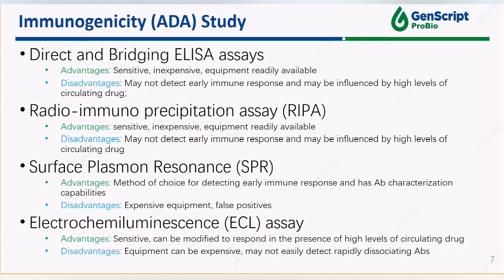Electrochemiluminescence assays have the advantage of sensitivity but may lack the ability to detect rapidly dissociating antibodies. Thus, assay choice depends largely on the stage of drug development and access to necessary equipment. Regardless of the method selected, a positive control or reference antibody is needed for appropriate immunogenicity measurement. Anti-idiotype antibody could serve this purpose. Purified anti-IDs can be spiked into the matrix selected for screening assay and used as a reference standard.